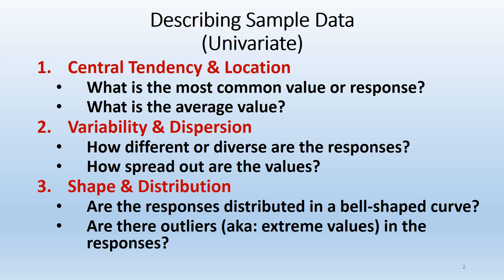If we're trying to summarize or describe one variable in a univariate sense, there are three aspects. We started our last lecture with central tendency and location — the most common value, the average value. Now we're moving on to variability and dispersion: how different or diverse the responses are, how spread out the values are. Just like with central tendency, the choice of statistical approach depends on your level of measurement — nominal, ordinal, or interval ratio.